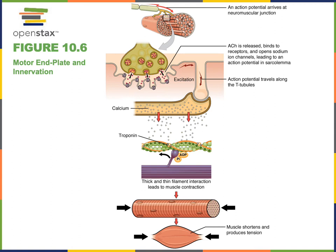The motor end plate is the plasma membrane — the sarcolemma — of the skeletal muscle fiber, and the axon terminal is the end of the motor neuron releasing neurotransmitter. The space that separates the axon terminal from the motor end plate is known as the synaptic cleft. Acetylcholine is released into the synaptic cleft, diffuses across it, and binds to the nicotinic acetylcholine receptors at the motor end plate.